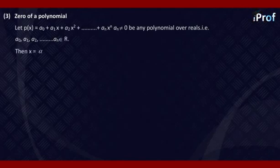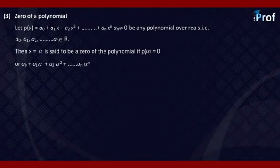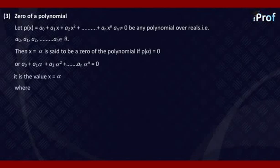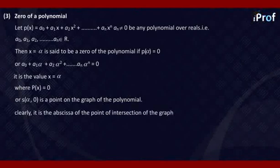Then, x equal to alpha is said to be a zero of the polynomial if P(alpha) equals zero. That means alpha satisfies the equation — that is, A0 plus A1·alpha plus A2·alpha squared, and so on, An·alpha raised to the power n equals zero. It is the value of x equal to alpha where P(x) is equal to zero. Further, (alpha, 0) is a point on the graph of the polynomial. Clearly, it is the abscissa of the point of intersection of the graph of the polynomial y equal to f(x) with the x-axis.